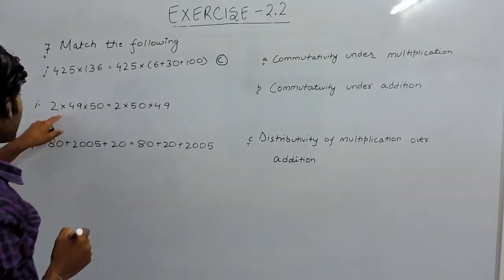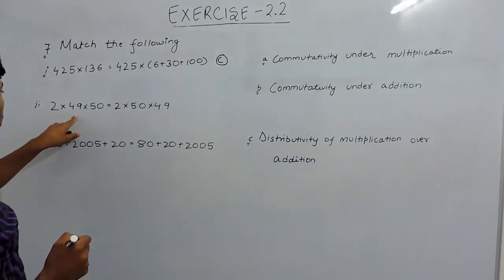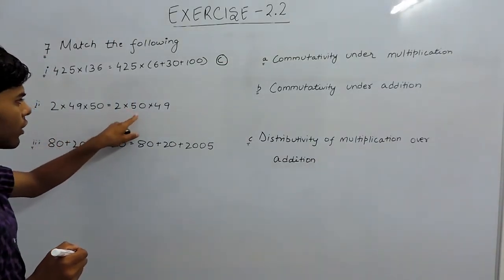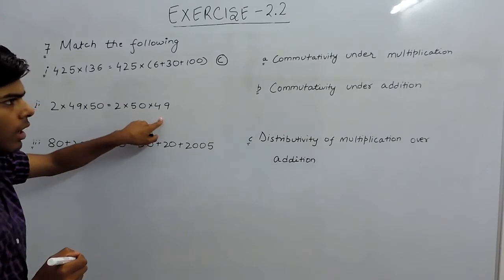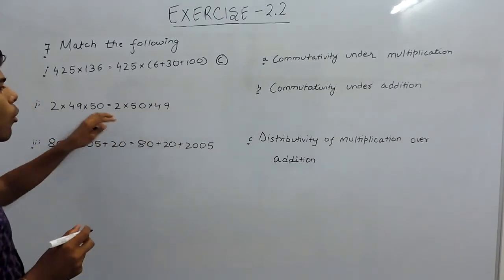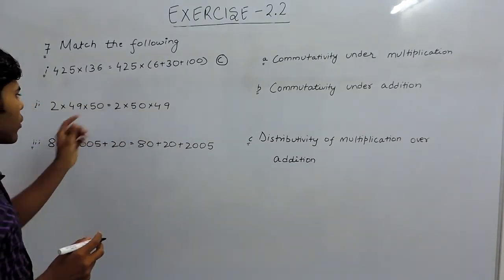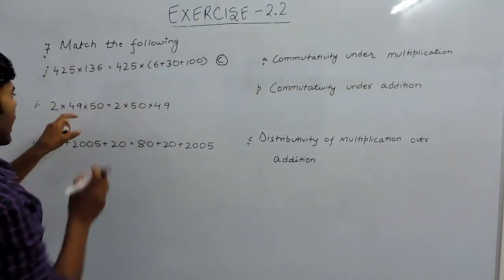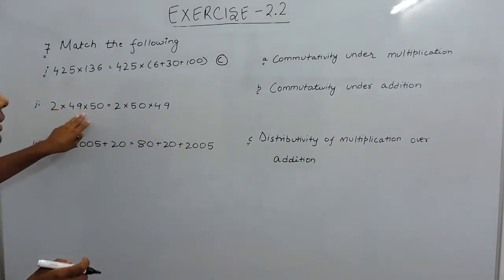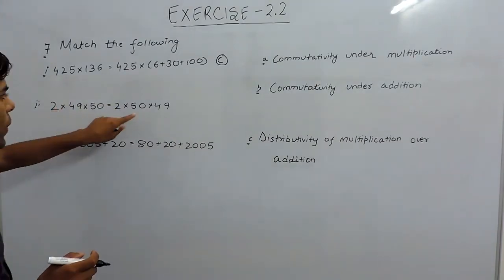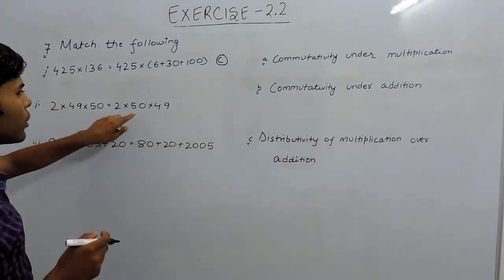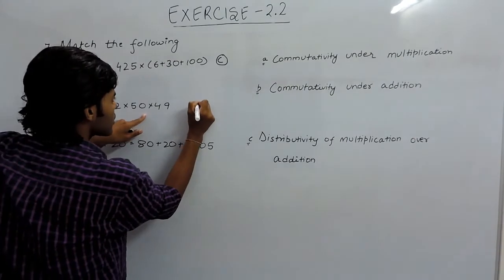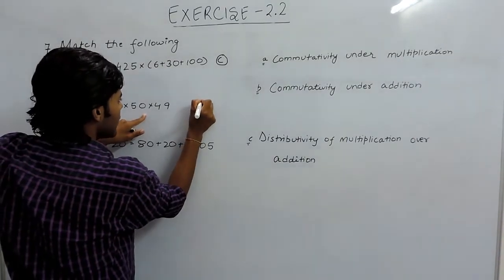In the second part, it is 2 into 49 into 50, which is further written as 2 into 50 into 49. This is commutative. Commutative means we can interchange, and because it is in multiplication, it will be commutative under multiplication. So the answer will be A.